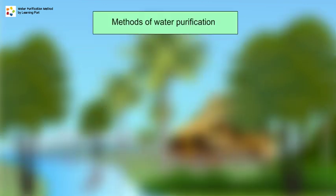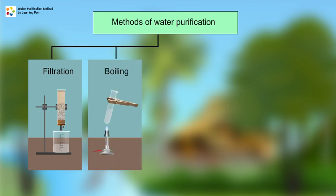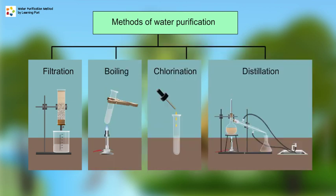Water from natural sources should be treated and purified to make it safe for human consumption. The methods of water purification include filtration, boiling, chlorination, and distillation.